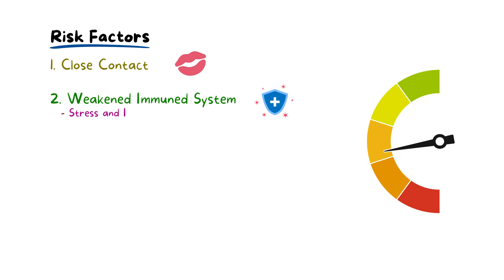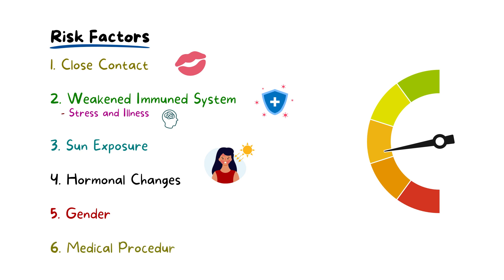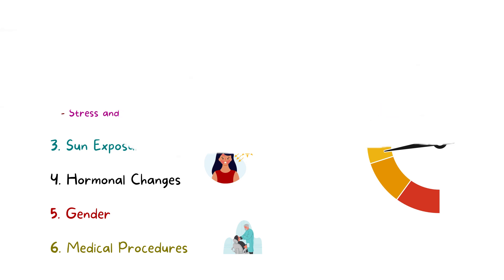Additionally, stress and illness weaken immune defenses, causing HSV reactivation and cold sores. Sun exposure, especially on the lips, triggers HSV outbreaks due to UV radiation. Hormonal changes, like menstruation, can also reactivate HSV, leading to cold sores. Female genital anatomy and high-risk sexual activity for both males and females also raise the risk of HSV. Medical procedures such as surgery or dental work may occasionally trigger HSV reactivation, especially when coupled with compromised immunity.